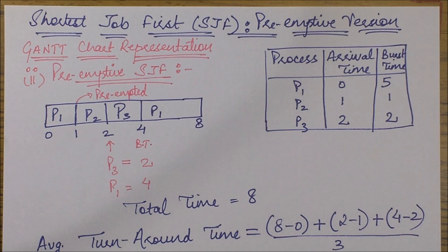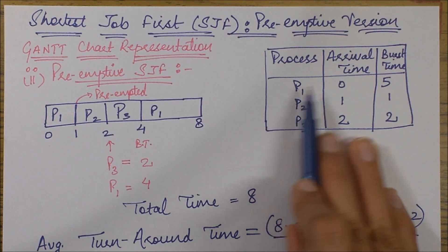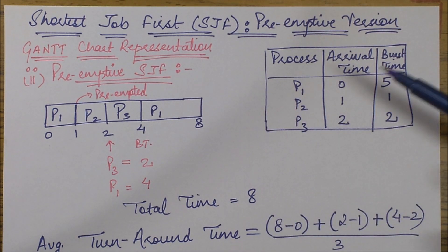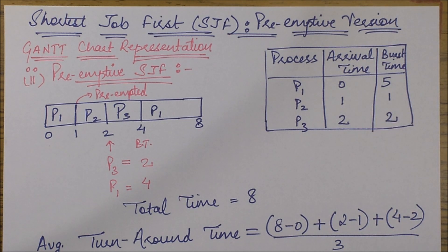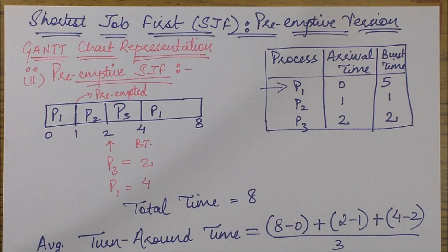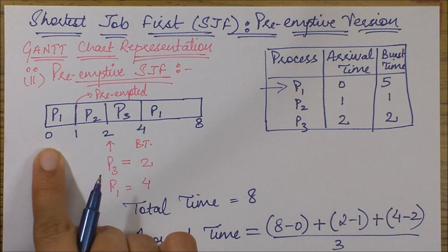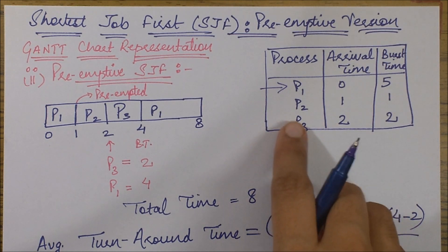Now let's start with the working. In the example we have three processes with three different arrival times. P1 is the only process which arrives at time instant zero, and the other processes P2 and P3 arrive later with different burst times listed here. We start with P1 because it is the only available process at time instant zero.